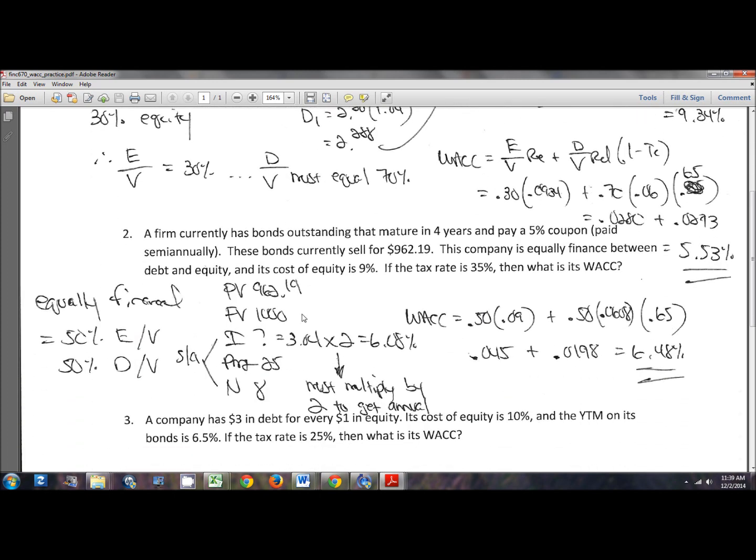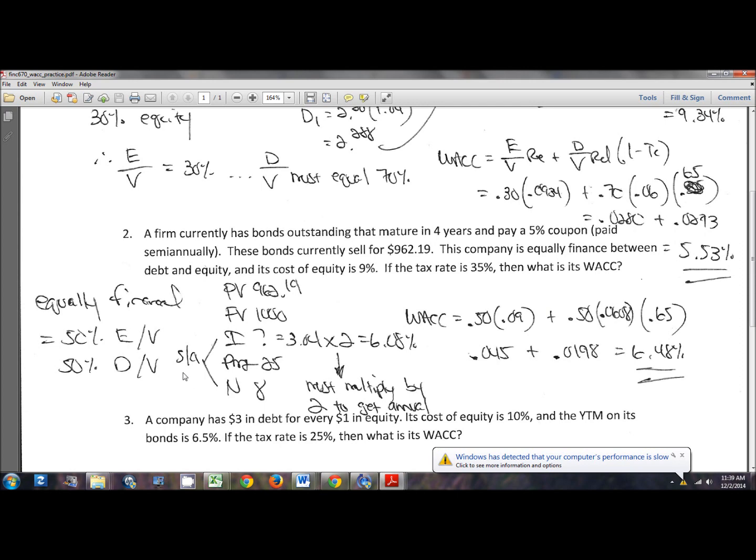Let's scroll down. Number two is kind of found in a similar way. The only comment I want to make about number two is that you have to solve the problem in semi-annual terms. And so then when you get to the end of finding yield to maturity, you have to multiply by two to get that number in annual terms to be input into the WACC equation.